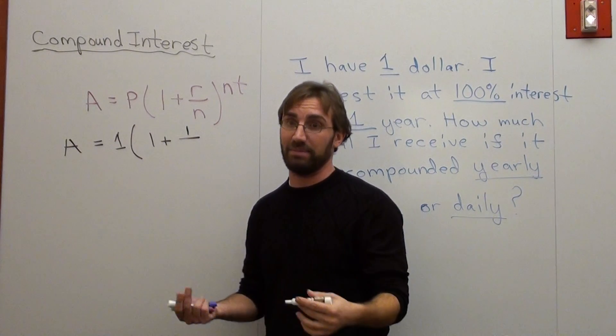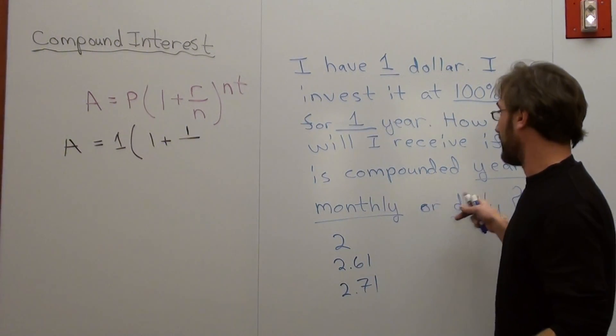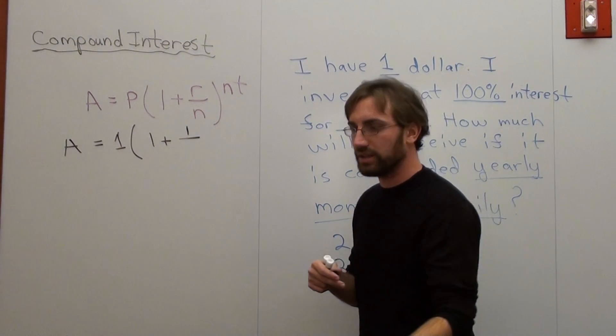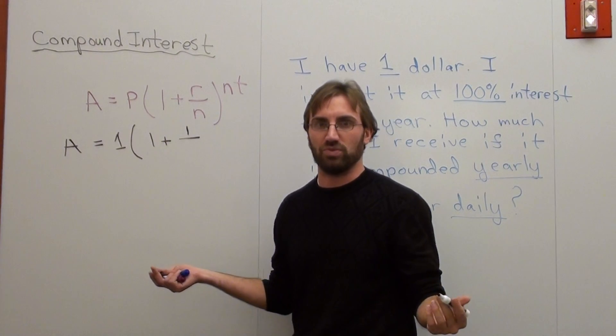N stands for the number of times I compound it. So in the first example, if it pays yearly, or if I want to know how much I get after one year and it compounds yearly, well, that only happens once.